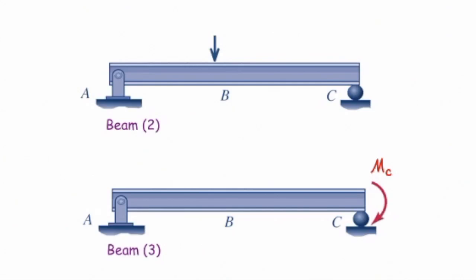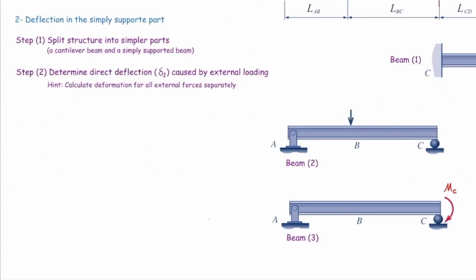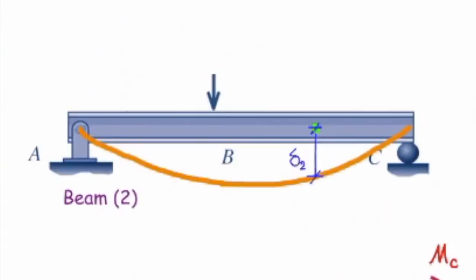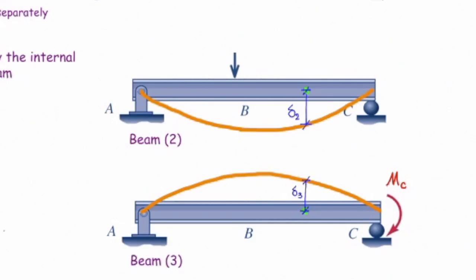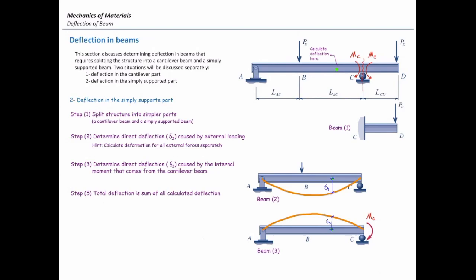In the simply supported parts — beam number two and beam number three — we need to determine the direct deflection caused by external loading, considering each force individually. Beam number two deflects as shown and we determine the deflection at the point of interest. Similarly, we determine the deflection due to the internal moment from the cantilever beam at that point, then add them together for the overall deflection.